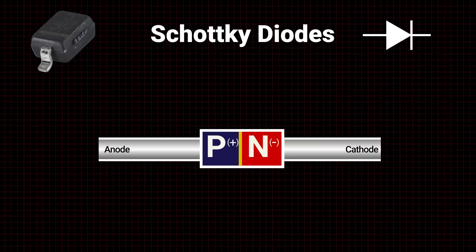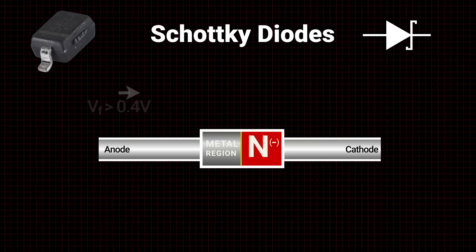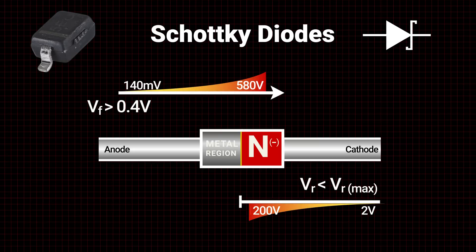Schottky diodes are constructed of a metal semiconductor junction as opposed to two doped semiconductor regions. The thin layer of metal bonded to an N-type semiconductor material provides a smaller depletion region than the standard diode. This requires a smaller forward voltage of 0.4 volts and a near-zero reverse recovery time. Disadvantages include higher reverse bias leakage currents and lower maximum reverse voltage.